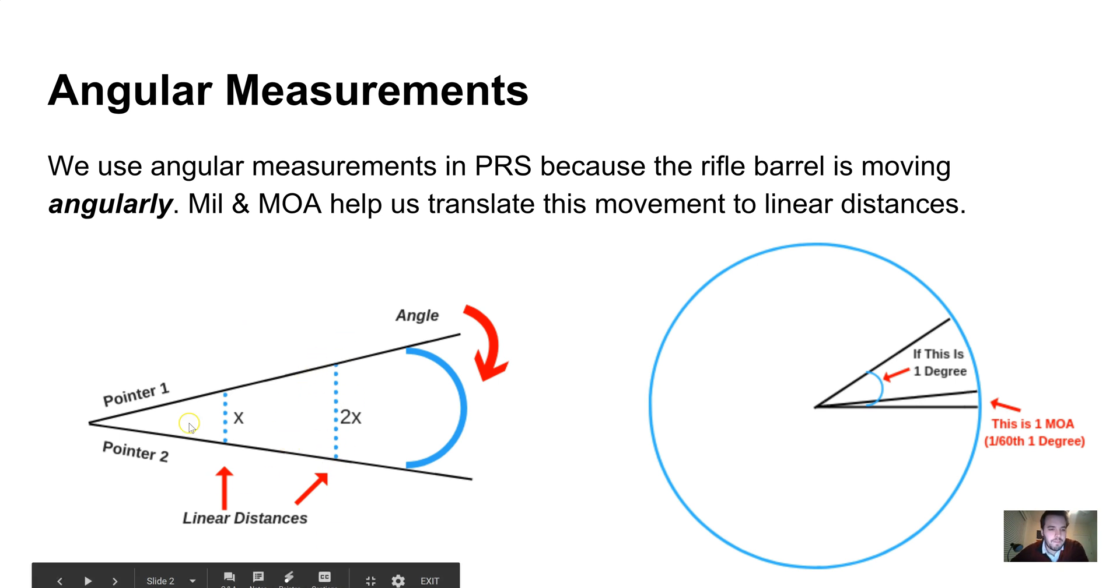We use MOA to calculate these distances so that you as the shooter know that at a certain distance, a given number of clicks is going to move it that far away.